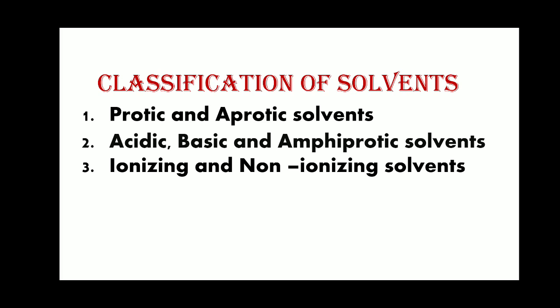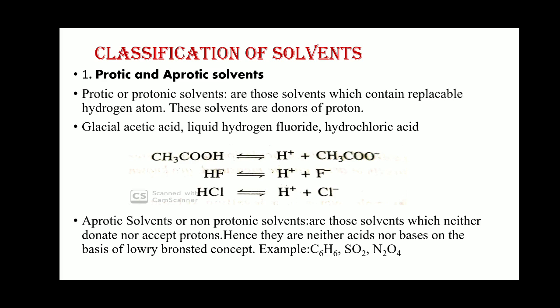Let us discuss each classification in detail. The first classification is protic and aprotic solvents. Protic or protonic solvents are those solvents which contain a replaceable hydrogen atom. These solvents are donors of protons, meaning we can derive H⁺ from them. For example: glacial acetic acid, liquid hydrogen fluoride, and hydrochloric acid.